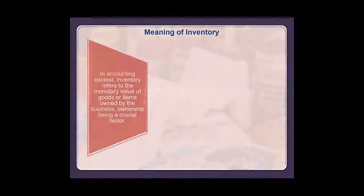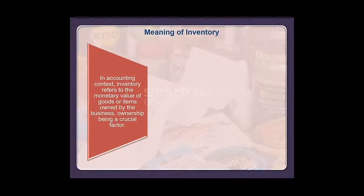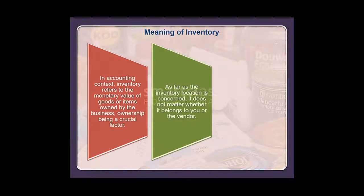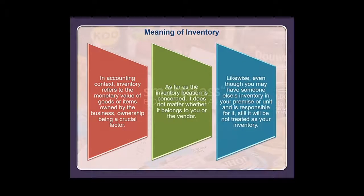In an accounting context, inventory refers to the monetary value of goods or items owned by the business, with ownership being a crucial factor. As far as inventory location is concerned, it does not matter whether it belongs to you or the vendor. Likewise, even though you may have someone else's inventory in your premises and are responsible for it, it will still not be treated as your inventory.